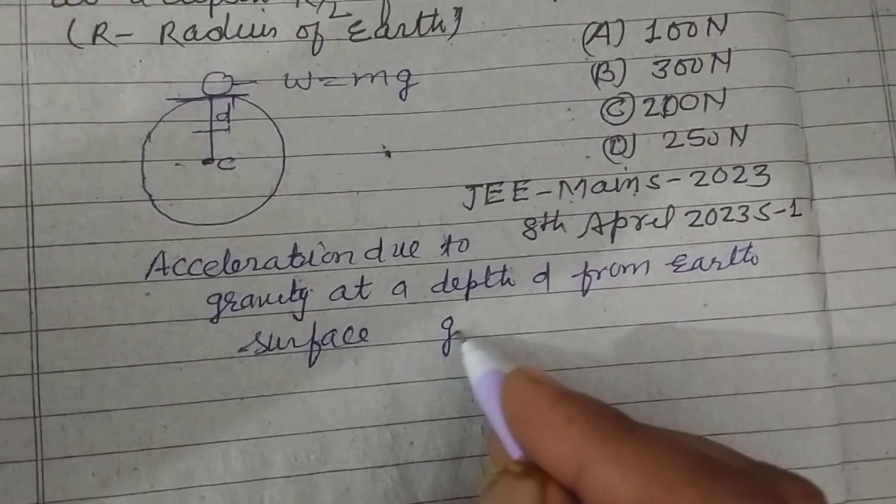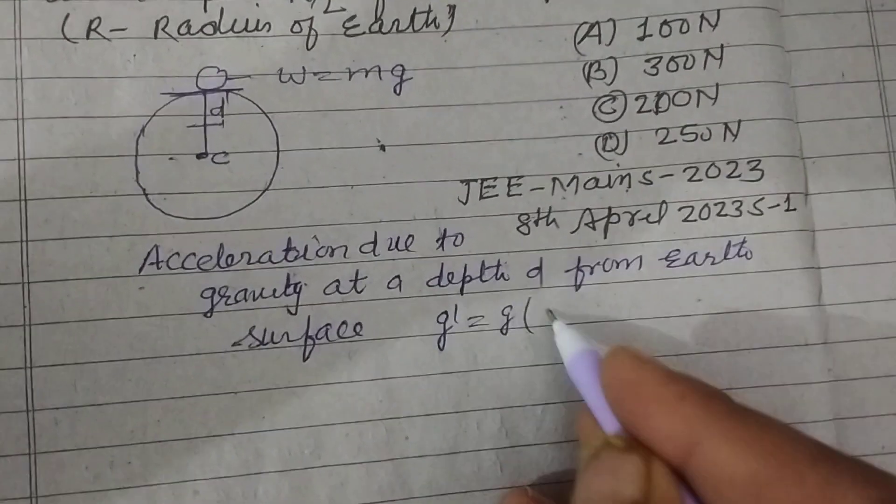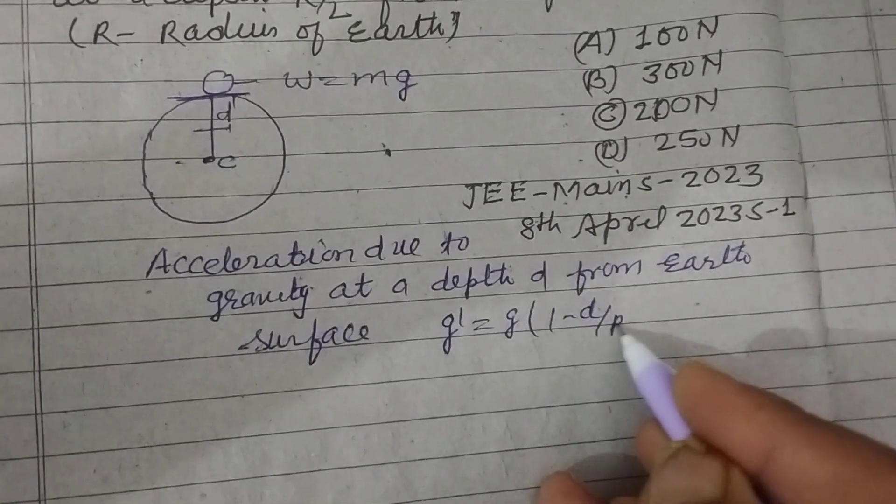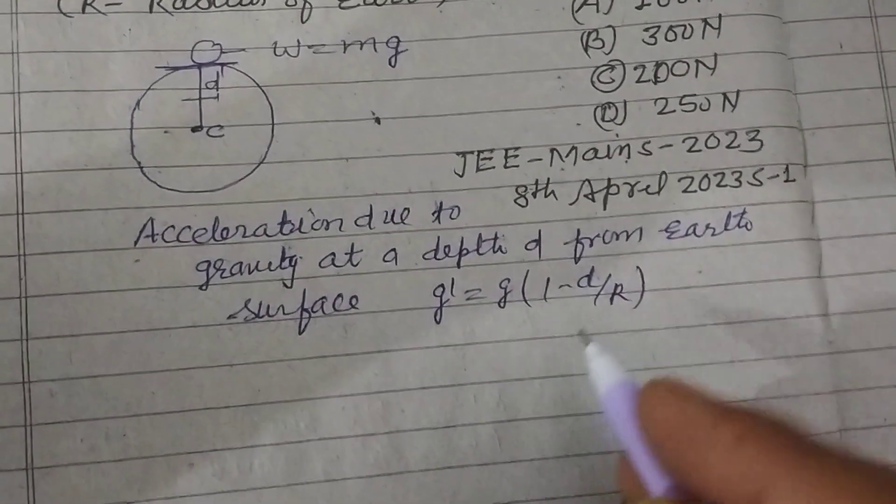surface is g dash equal to g times 1 minus d over r, where r is the radius of Earth.